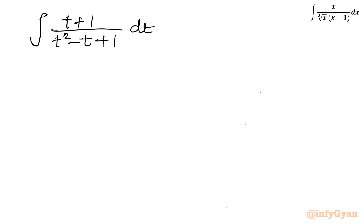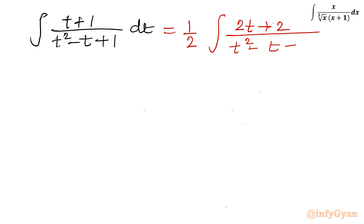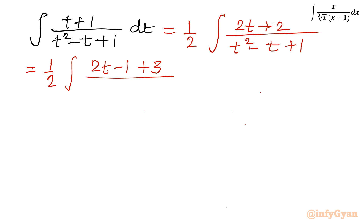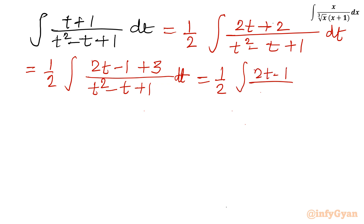I will multiply the numerator by 2 and divide by 2, writing 1 by 2 times the integration of (2t plus 2) over (t squared minus t plus 1). Then I write 2 as (2t minus 1) plus 3, so this becomes 1 by 2 times the integration of (2t minus 1) over (t squared minus t plus 1) dt, plus 3 by 2 times the integration of dt over (t squared minus t plus 1).